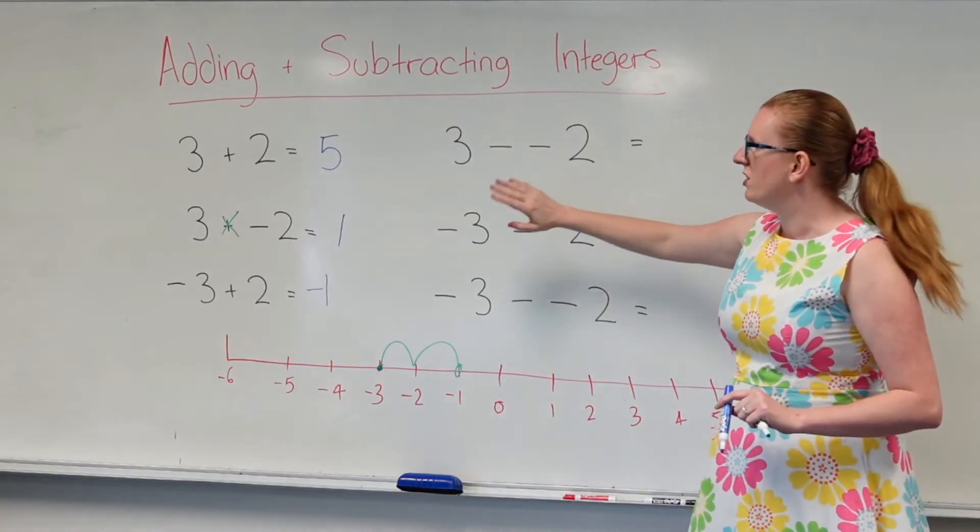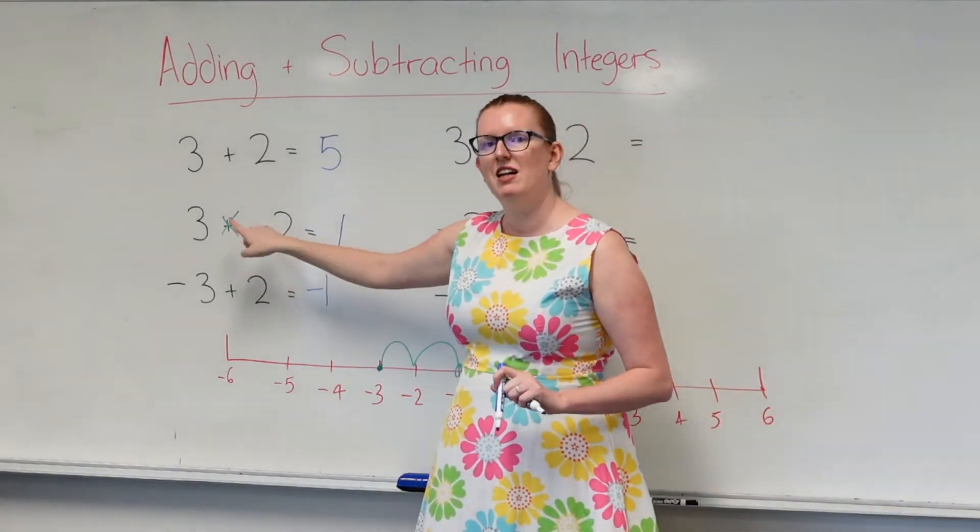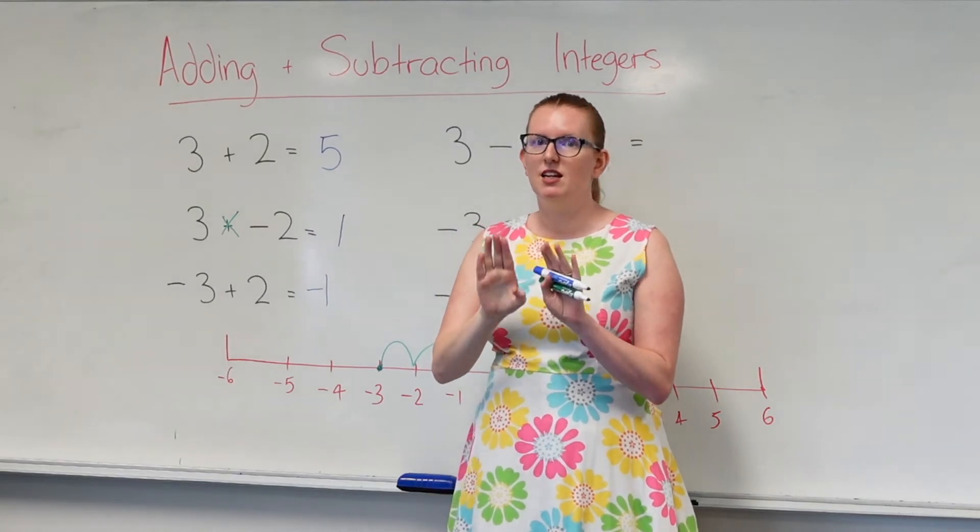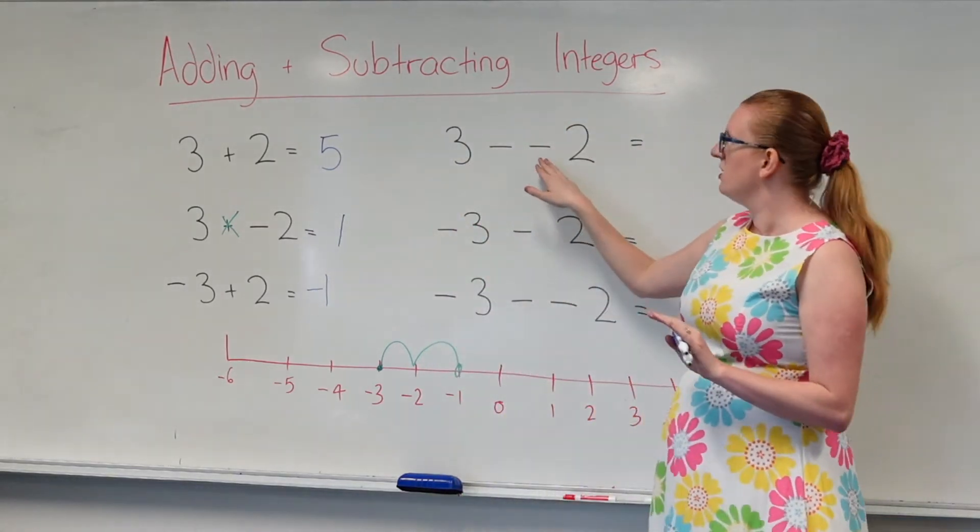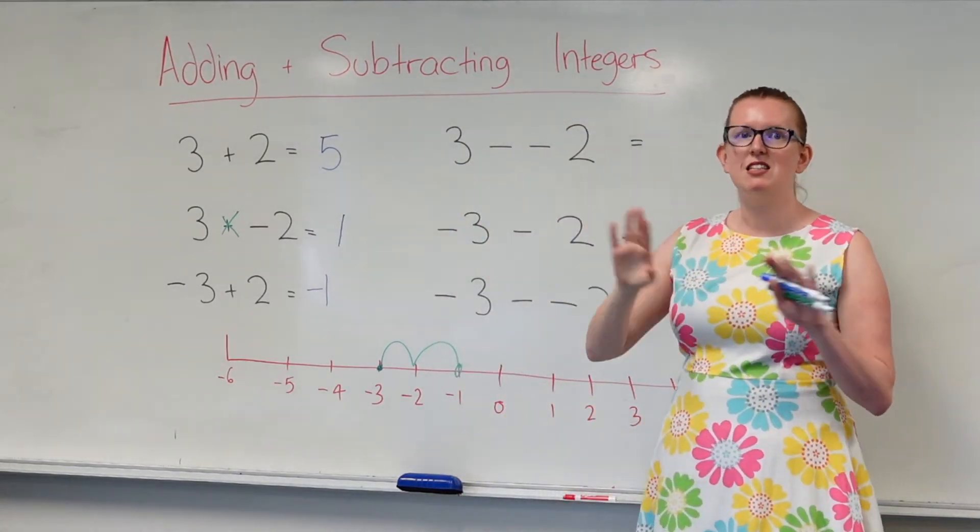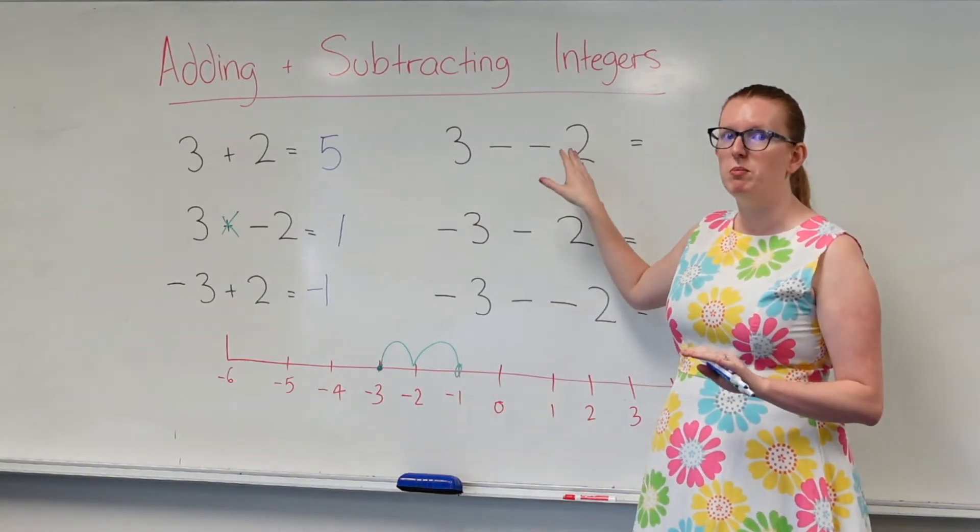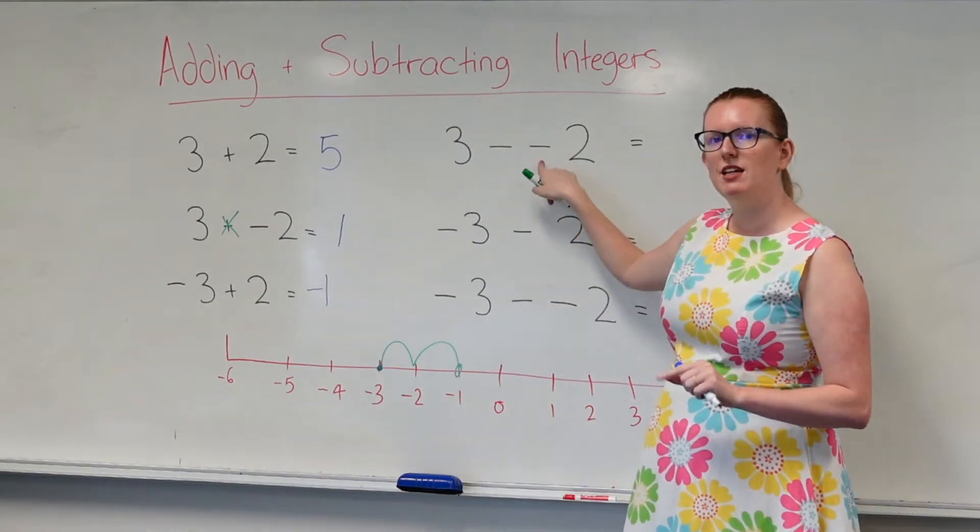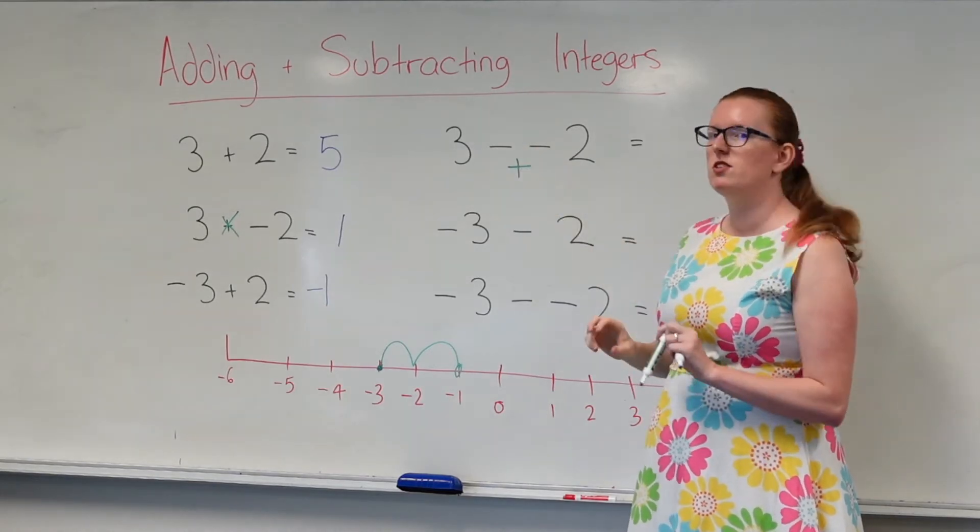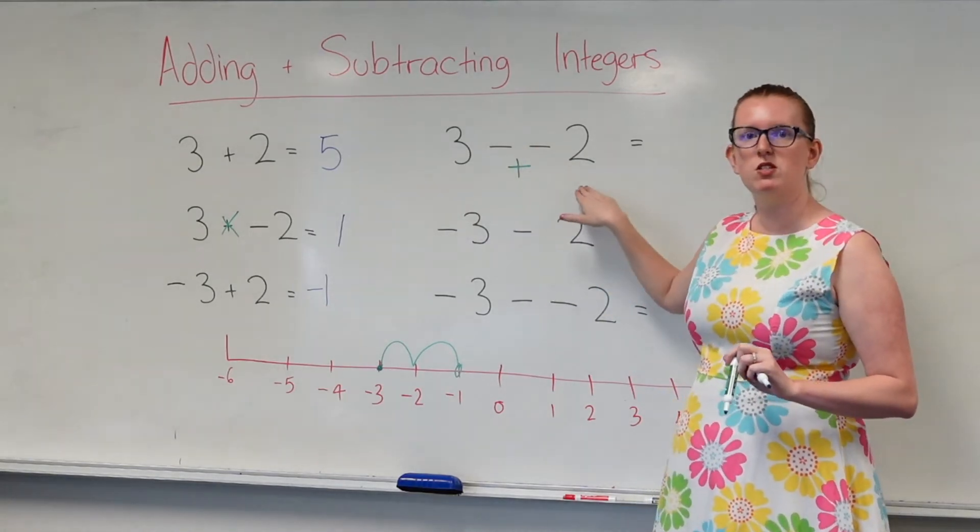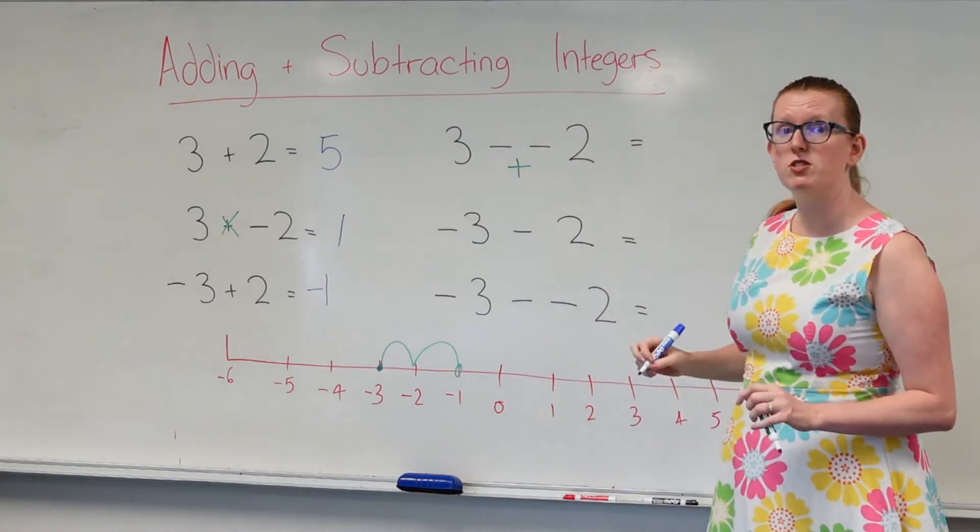Now let's have a look up here. You know how down here when I set up a positive and a negative next to each other, the negative wins? Well, here, two negatives actually cancel each other out, and they turn into a positive. So, two negatives equals a positive. This is actually 3 plus 2. So, 3 plus 2 is 5.